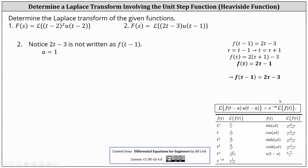This is the function we needed, because f of tau minus one equals two times tau minus one, minus one, which equals two tau minus three. Notice f of tau minus one is the same as the given function f of t minus one, or two t minus three, just with a different variable.